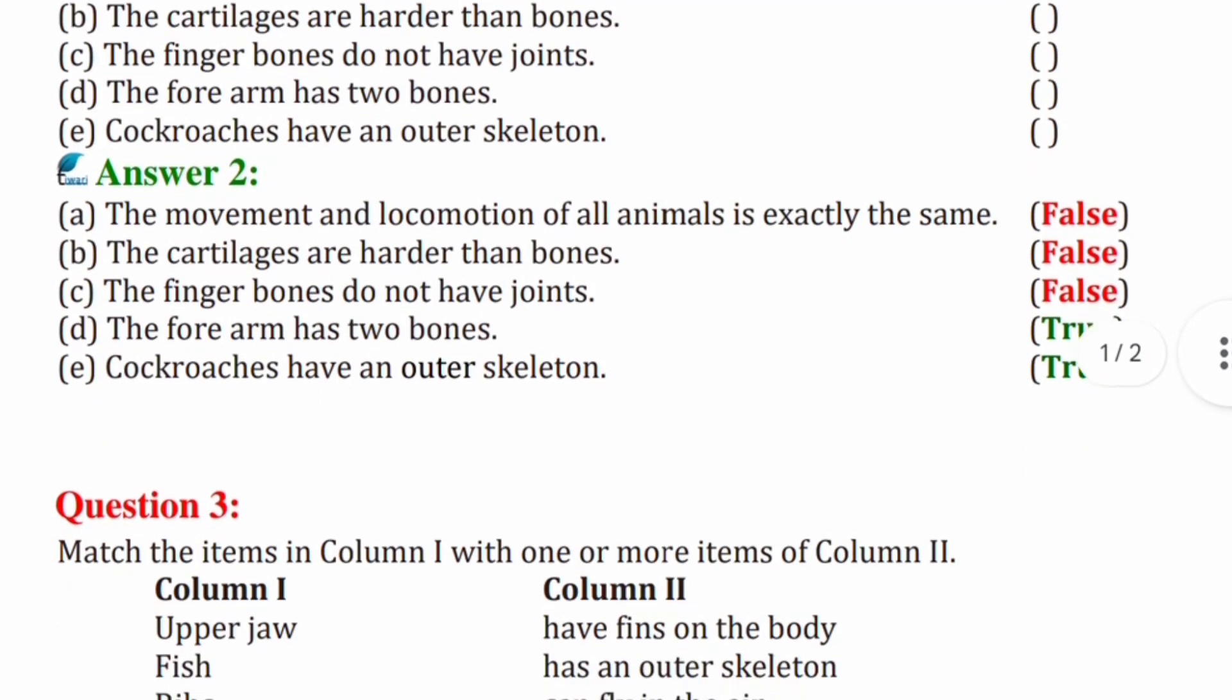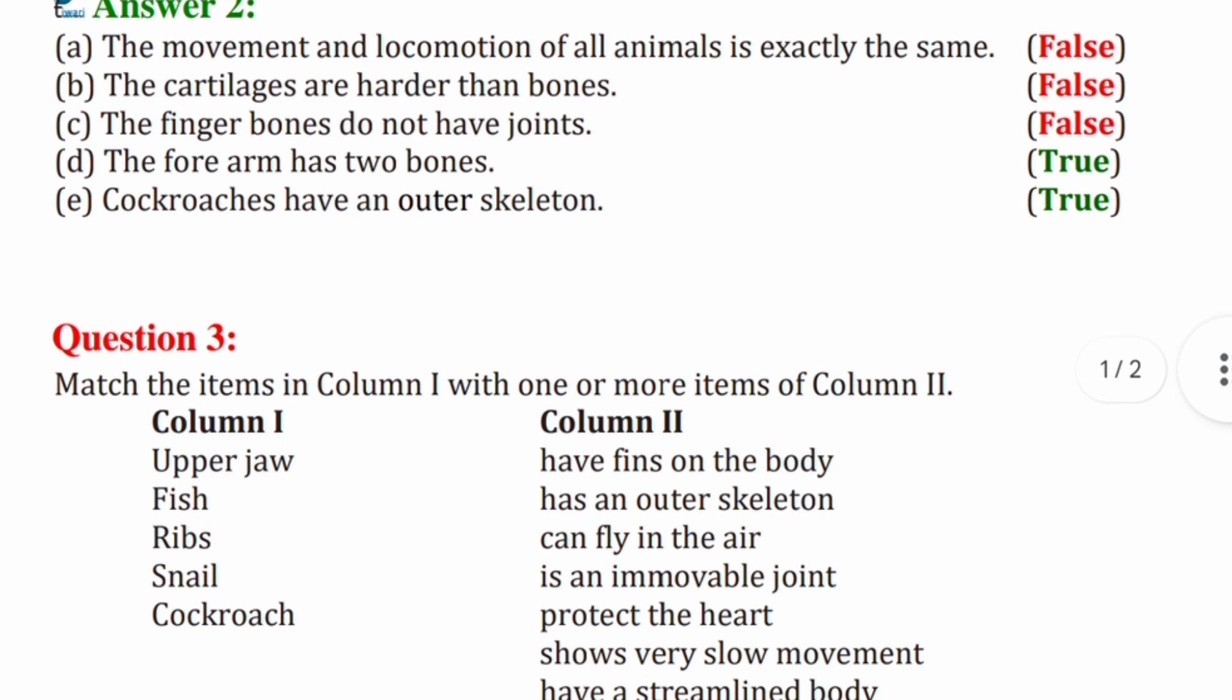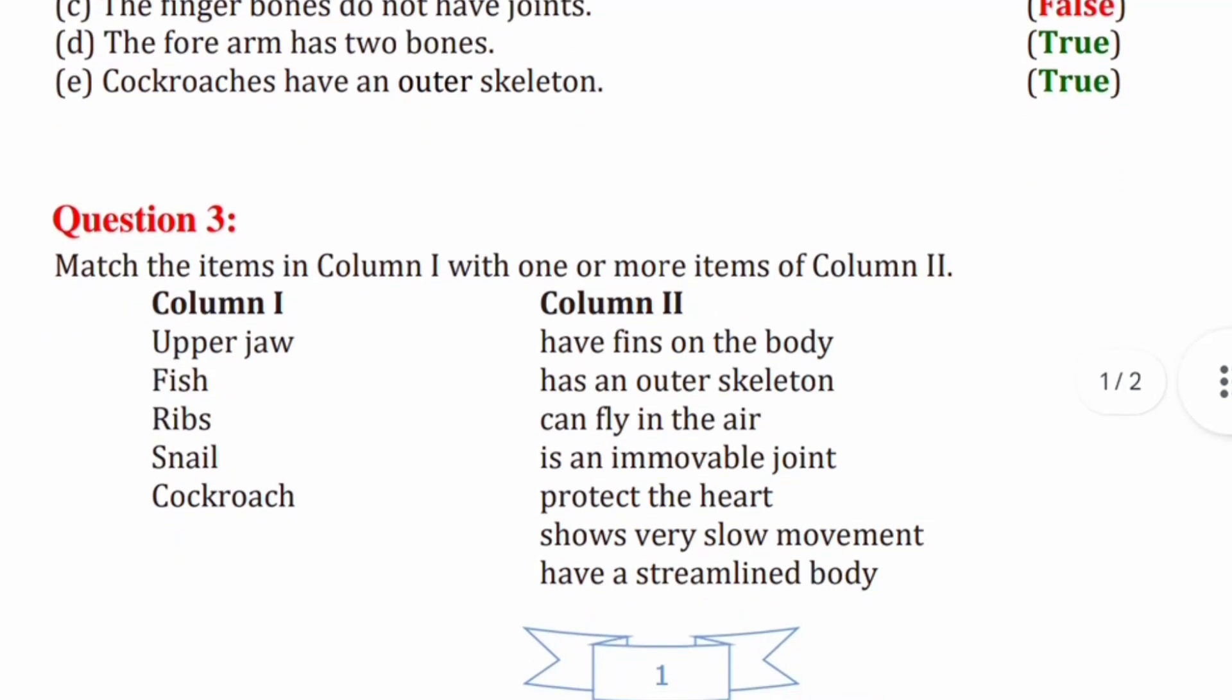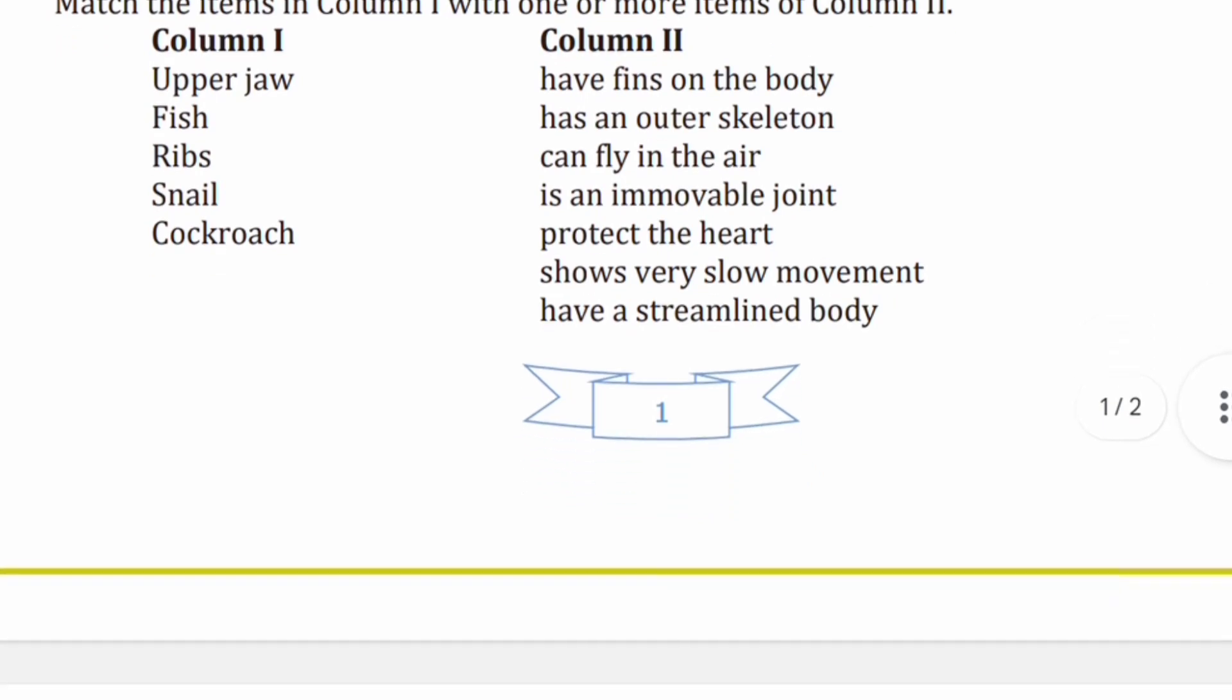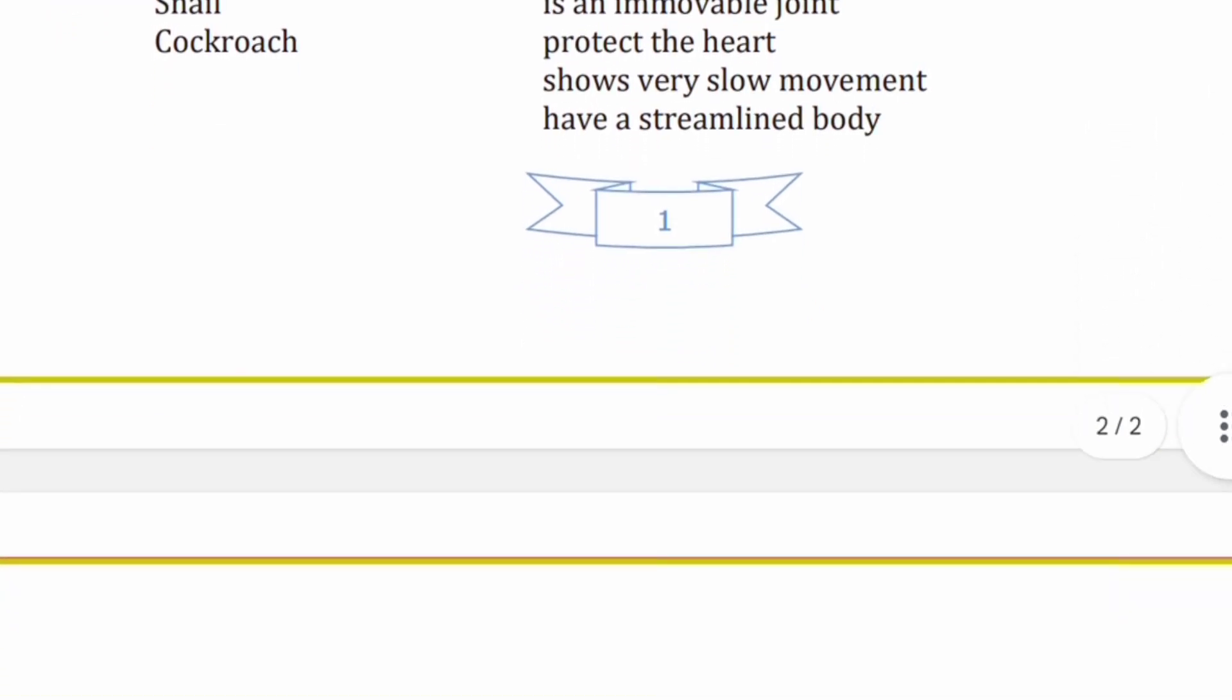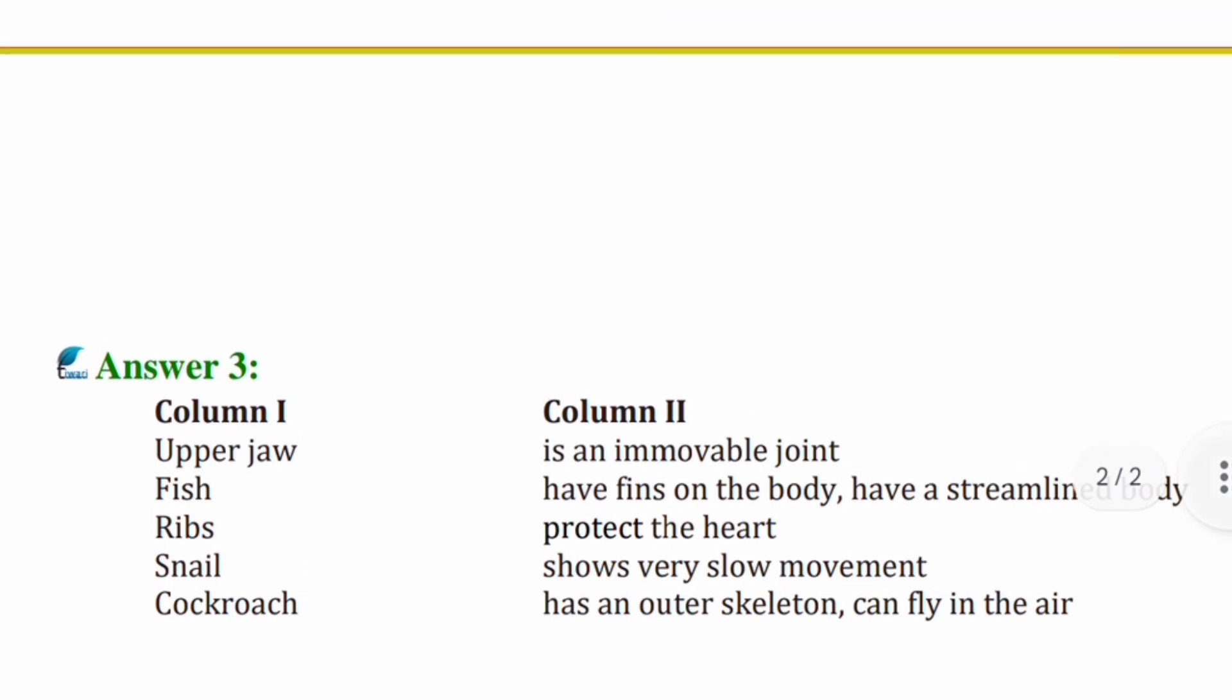Question three: Here two columns are given and you have to match, okay? So first is upper jaw. Let's directly see the solutions to this question. Okay, so here is the answer to question number three. Upper jaw is an immovable joint.